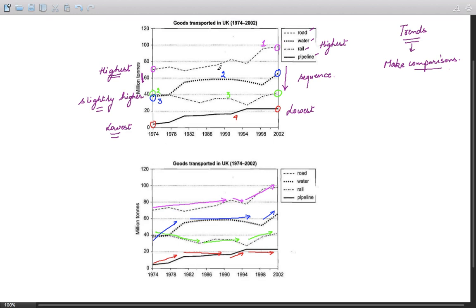Pipeline carries the least amount of goods in million tons throughout the given duration. There is a comparison between number two and number three, which is water and rails. At the beginning of the period, rails are higher than water transport. Rail is slightly higher—this is a comparison as well as a main feature.